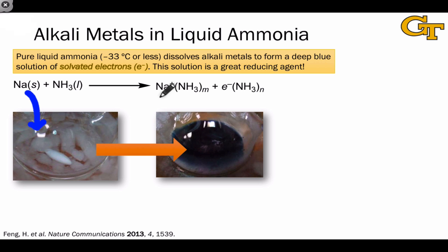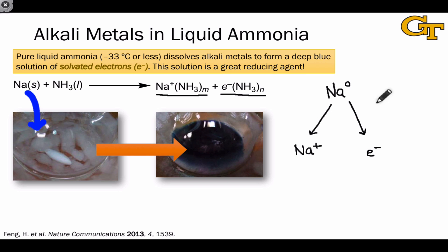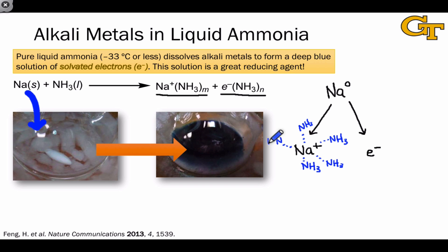What's happening on the submicroscopic level is the oxidation of the sodium metal to Na⁺ and the solvation of the resulting electron by ammonia molecules. Focusing on a single sodium atom, that atom is converted to Na⁺ and an electron. This occurs because sodium metal is a strong reducing agent — it wants to get rid of its electron. Liquid ammonia promotes this process by solvating both the sodium ion and the electron through ion-dipole interactions, with the partially positive hydrogen of NH₃ oriented toward the electron.